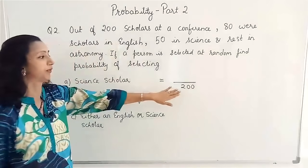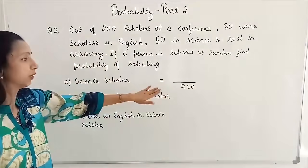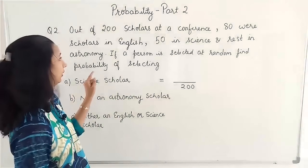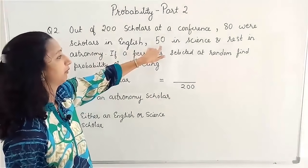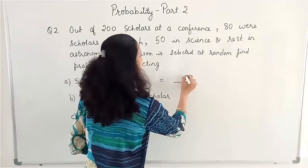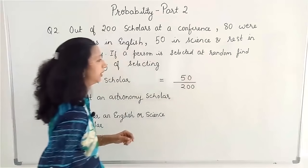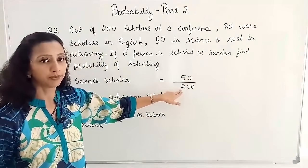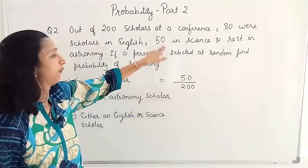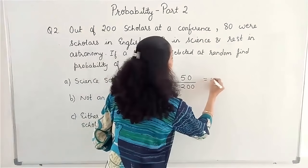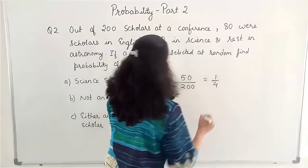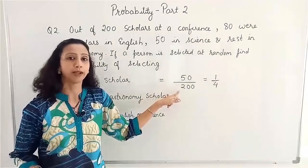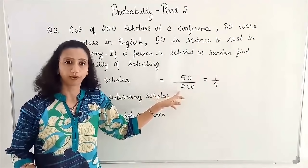The total number of guests is 200, so that comes in the denominator. Out of this, if I have to select a Science scholar — how many Science scholars have been given? 50. That means the favourable outcome is 50. So the probability of selecting a Science scholar is 50 by 200. Reducing to lowest terms: 50 and 200 cancel out as 1 by 4, since 50 into 4 is 200.